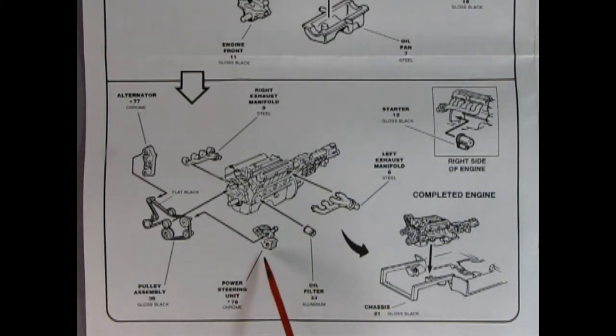And once we get that sub-assembly done we can add on our left and right hand side exhaust manifolds, the oil filter, the power steering unit onto our belts, another serpentine belt. We got our alternator there and then we've got our starter motor here and all of that hooks into our chassis.